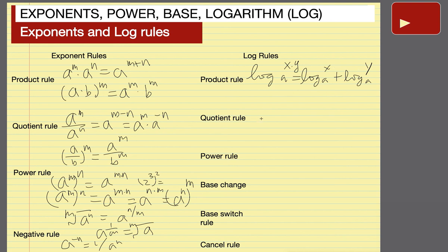Quotient rule: log base a of x divided by y is the base a log of x minus the base a log of y. Power rule: log base a of x to the y's power is equal to y times the base a log of x. This is one of the most interesting rules.